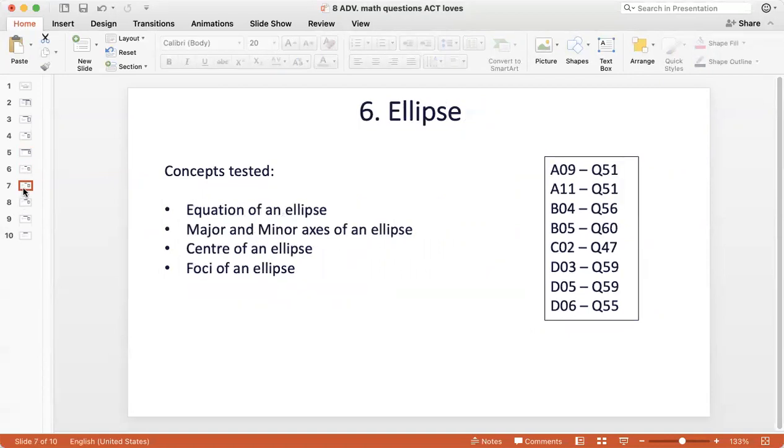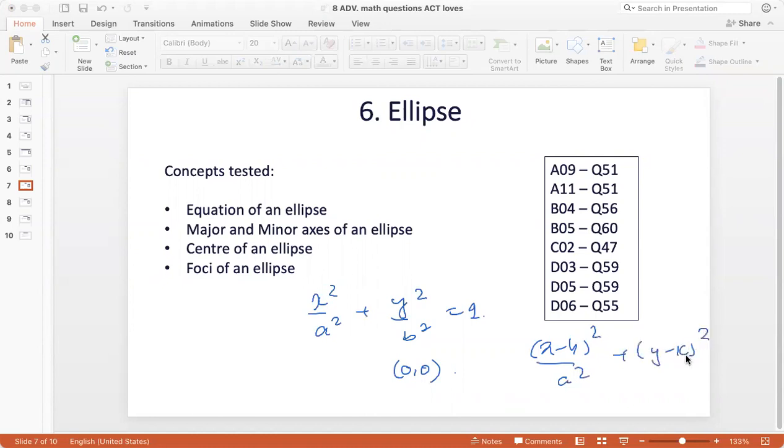Then you have ellipse. Technically, ellipse is part of geometry, but I included this as a separate topic. This appeared eight times on the tests. Here, you need to know the equation of an ellipse: x²/a² + y²/b² = 1 when the ellipse is centered at the origin, and (x - h)²/a² + (y - k)²/b² = 1 when the ellipse is centered at (h, k). You must know what the major and minor axes of the ellipse are, the center, and the foci of the ellipse. All of these questions have been solved. I would also link to a detailed ellipse video in the description box.